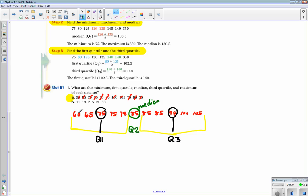So the minimum is 60, the first quartile is 75, the median is 85, the third quartile is 95, and the maximum is 105.